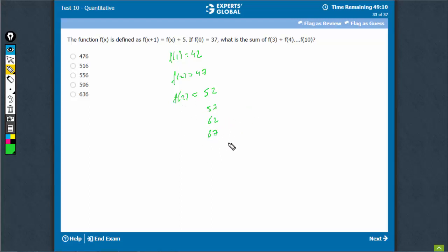Again, they are going to be 9 terms. There are many ways of doing it. I will tell you a couple of ways of doing it smartly. 72, 77, 82, 87. Let's see, 4, 5, 6, 7, 8, 9, 10.